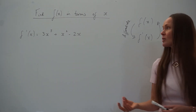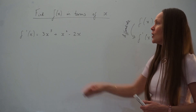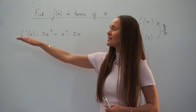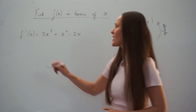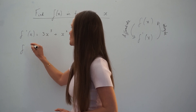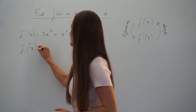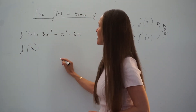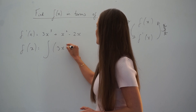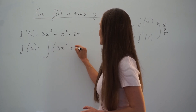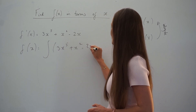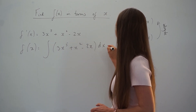So that's exactly what I'm going to do here. We've been given f dash of x, so in order to find f of x we have to integrate this expression. I'm going to integrate 3x to the power of 5 plus x squared, take away 2x, with respect to x.